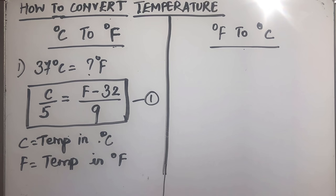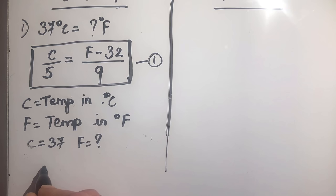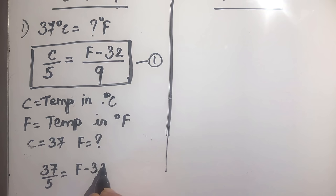So let's get started. We will substitute the values into the equation and then find the temperature in Fahrenheit. Here C is equal to 37 and F is unknown. So we put the values in: 37 over 5 is equal to F minus 32 over 9.